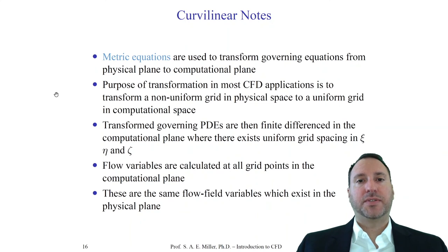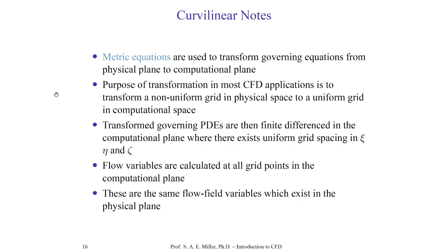The so-called metric equations are used to transform the governing equations from the physical plane to the computational plane. The purpose of the transformation is to convert a non-uniform grid in physical space to a uniform grid in computational space. The PDEs are then finite-differenced in the computational plane where there exists constant uniform grid spacing of delta-xi, delta-eta, and delta-zeta. Zeta here represents the z direction. You could also transform time: for x, y, and z we have xi, eta, and zeta.